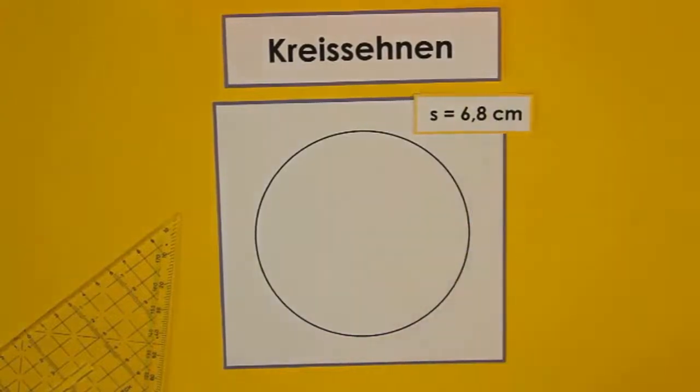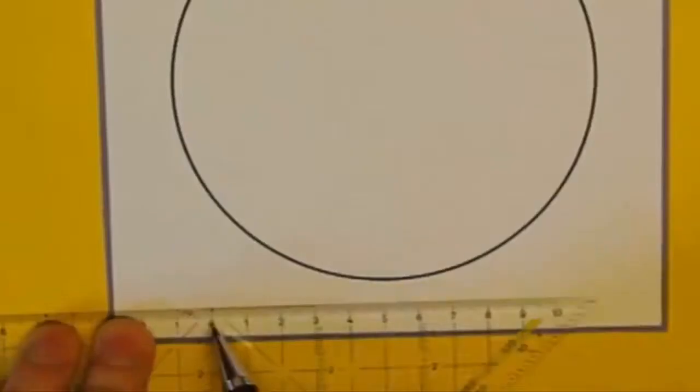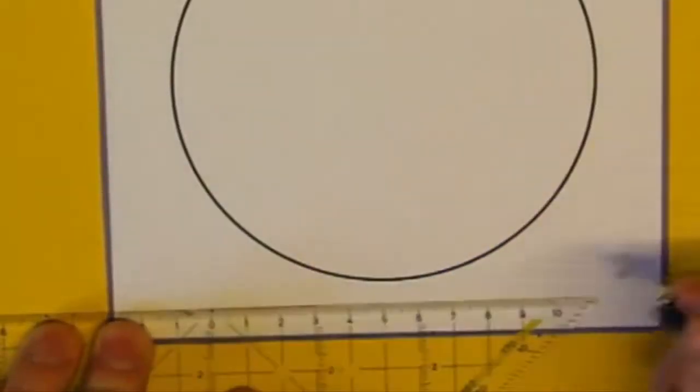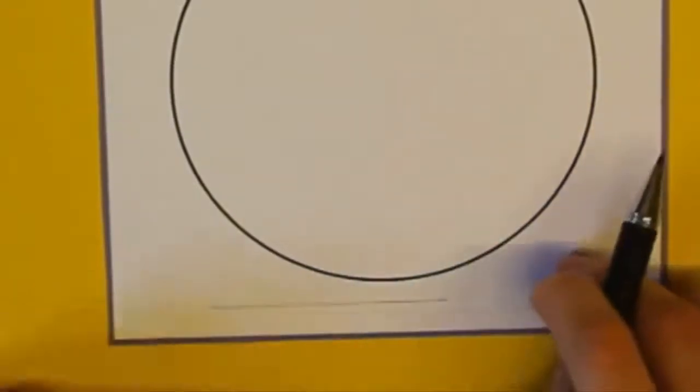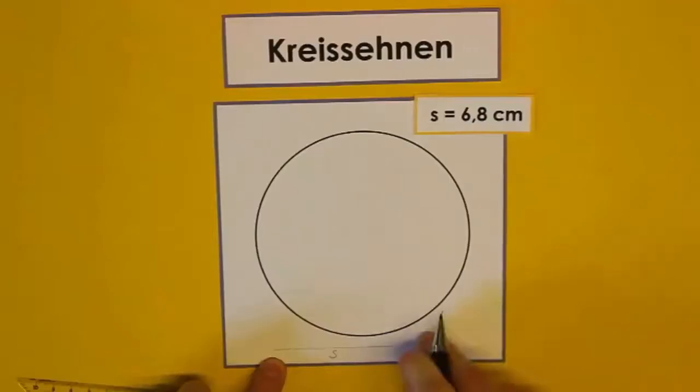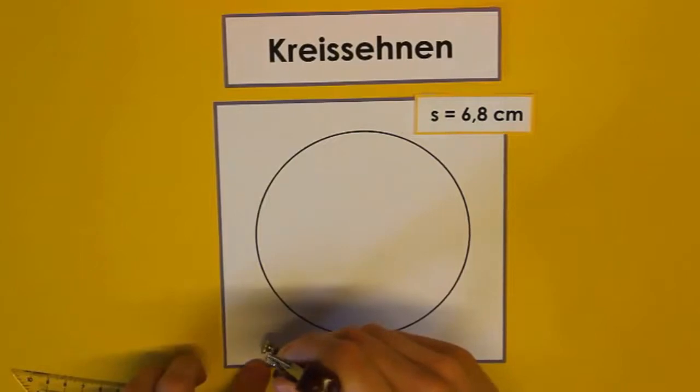Szene konstruiert man am besten mit einem Zirkel. Genauer gesagt, ihr macht das bitte immer mit einem Zirkel. Dazu machen wir, ähnlich wie beim Kreis zeichnen, zuerst eine Hilfslinie, die genauso lang ist wie die Szene, die wir konstruieren möchten. Das heißt, wir zeichnen jetzt hier mit dem Lineal eine 6,8 cm lange Hilfslinie. Und diesen Abstand nehmen wir dann in den Zirkel.